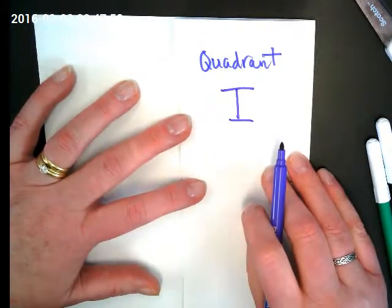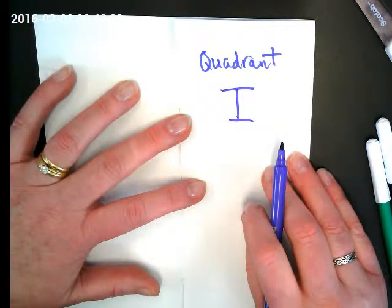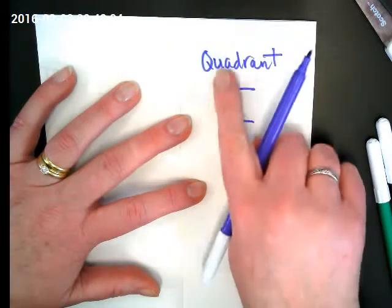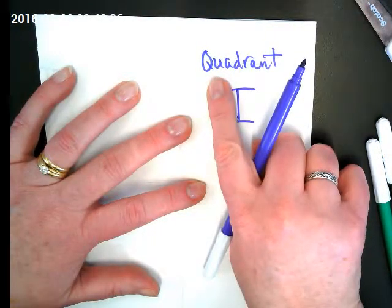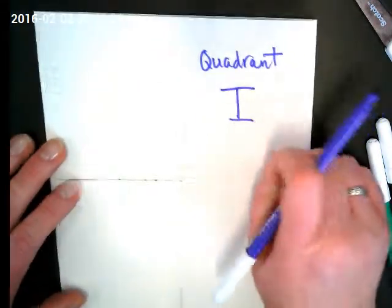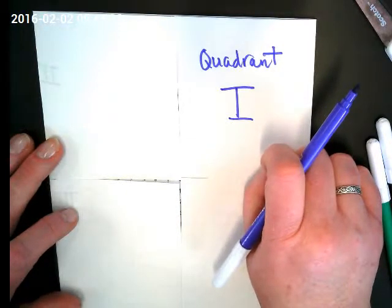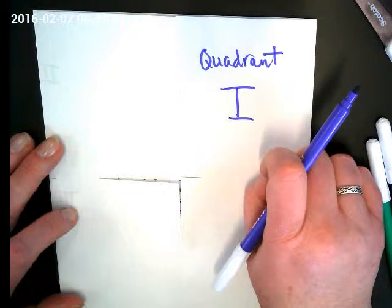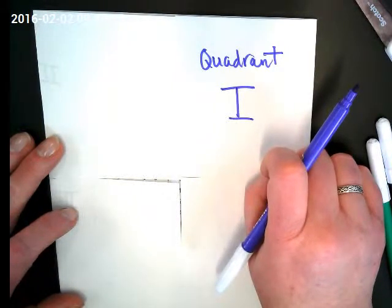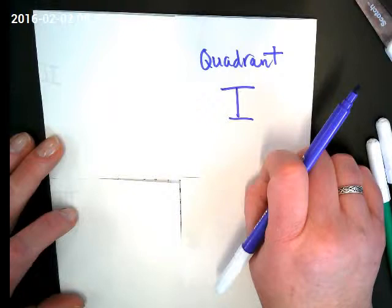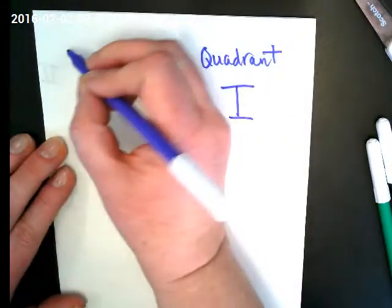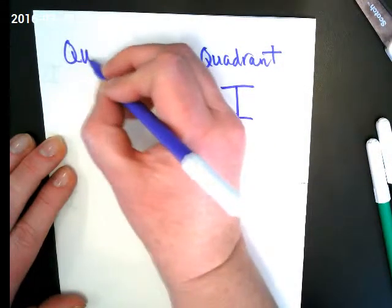How many of you know what the number four is in Spanish? Cuatro. Cuatro, quad, come from the same root, which means four. And quarter comes from that also. How many quarters make up a dollar? Four. That Q-U-A is a root word for four.